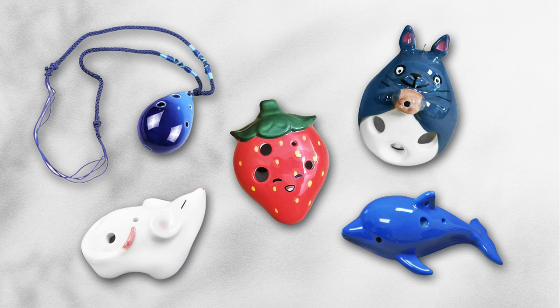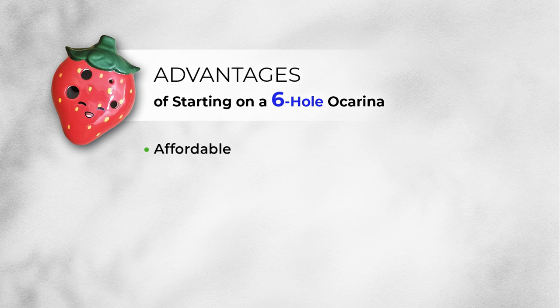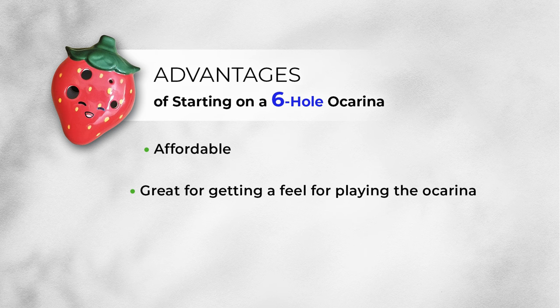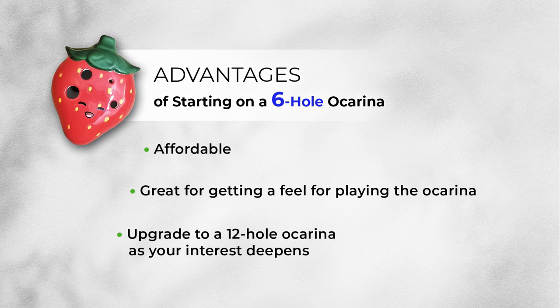But what if you are just curious and not looking for anything fancy? That's cool too. If you simply want to try out an ocarina and see if you like it, go for a simple six-hole one. These ocarinas often come in adorable shapes like animals, fruits, or a small necklace. They are not too pricey, making them an excellent choice for your first ocarina adventure. If you find you're really into it, you can always think about getting a 12-hole ocarina down the road.